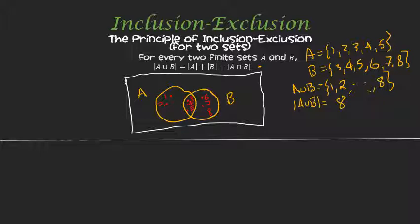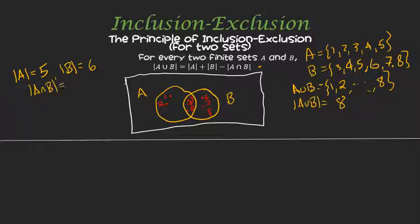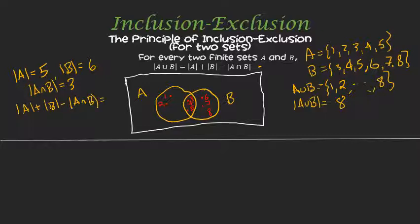So what this is saying: we find cardinality of A first — that would be 5 — and we find cardinality of B — in this case that is 6 — and then we find the cardinality of their intersection. We still need to compute their intersection, but sometimes that's easier since it'll have fewer elements than A union B. There are three things they have in common. So we add up the cardinalities: 5 plus 6 minus 3, or 8. And that agrees with what we got before.